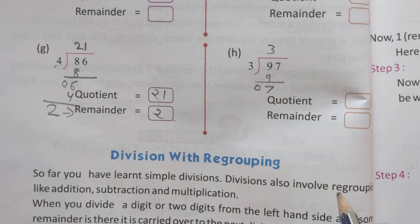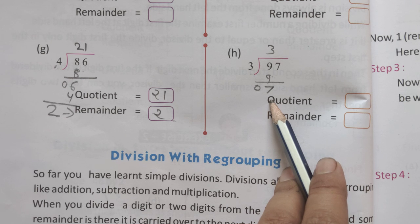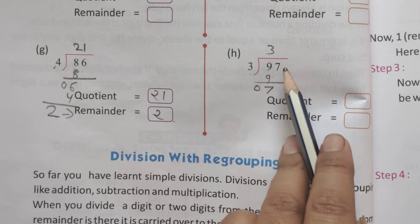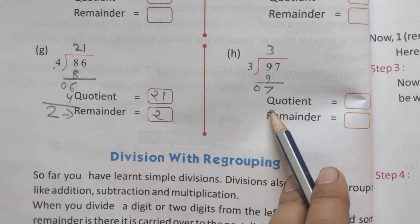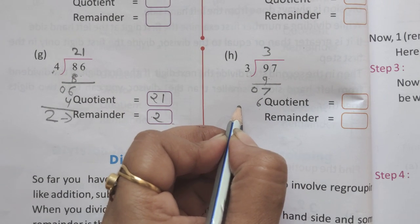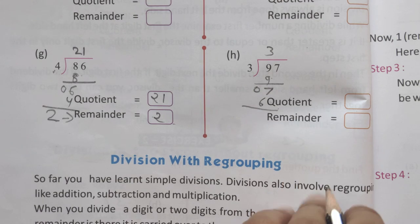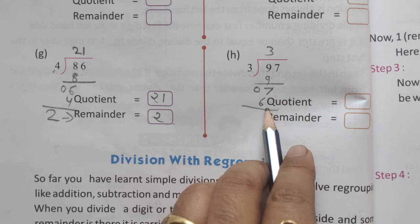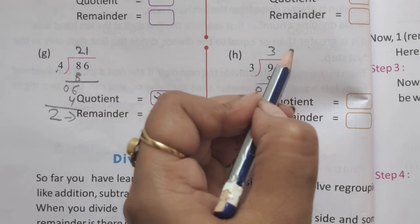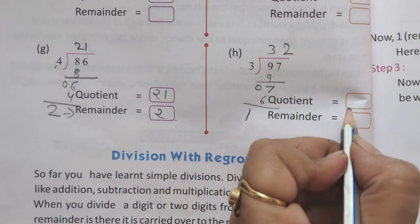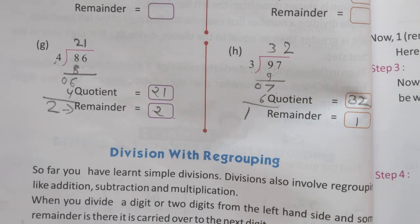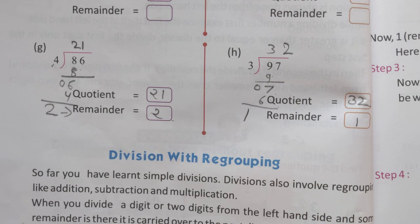3 ones are 3, 3 twos are 6, and 3 threes are 9. Since 9 is greater than 7, we use 3 twos which is 6. 6 is less than 7. 7 subtract 6 equals 1, the remainder. The quotient is 32 and the remainder is 1. Is this the right answer?